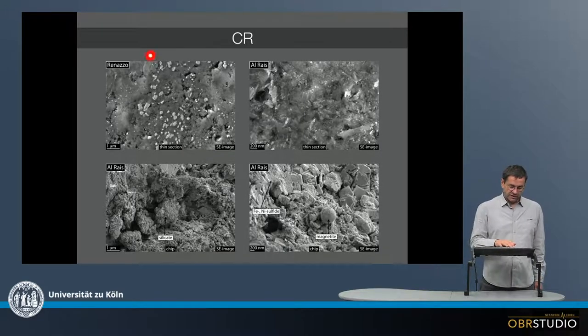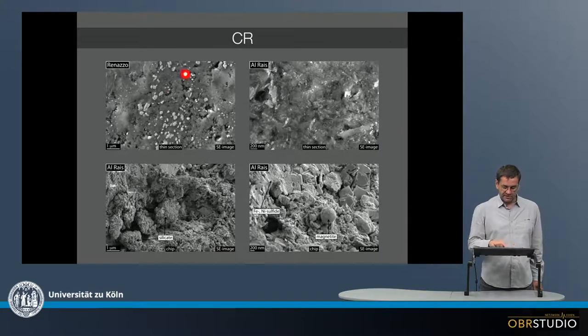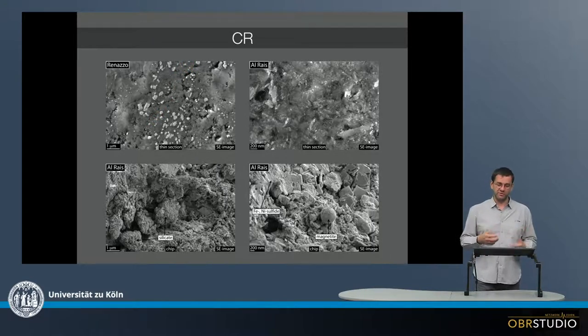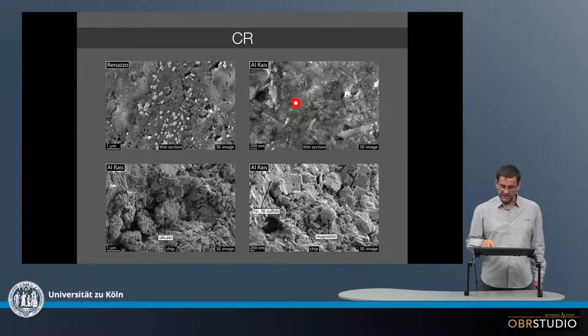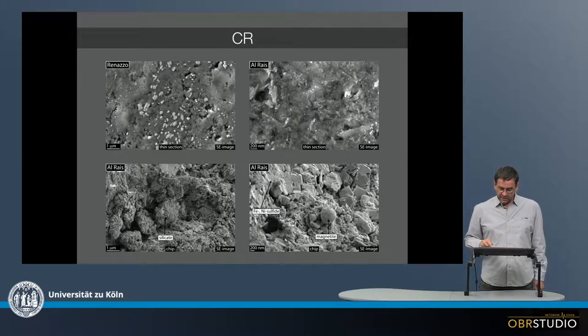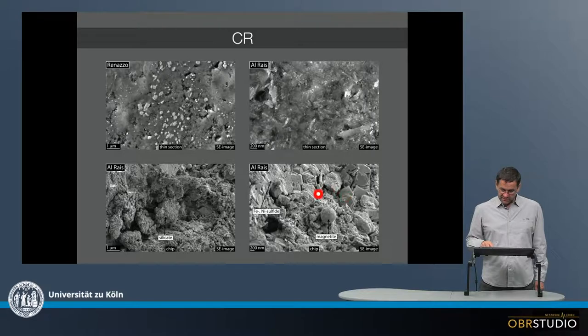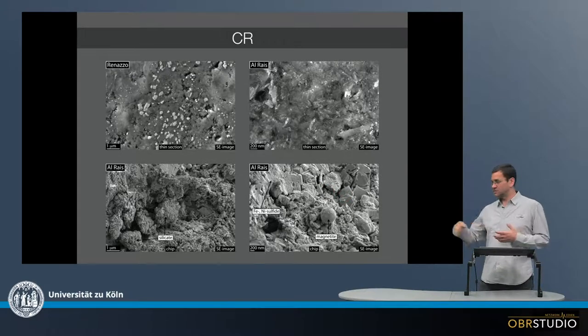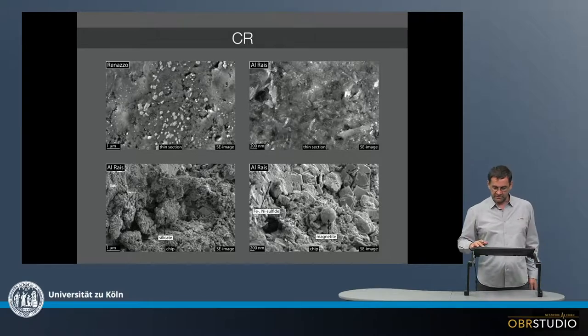In Renazzo, the CR chondrite, it looks rather like a homogeneous mass, so it also looks like some overprint on the parent body, same as here in Al-Rais. And sometimes there's also again these magnetites, these are quite easy to identify, this is why they are on every second image or so.